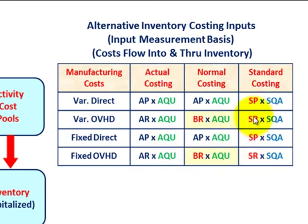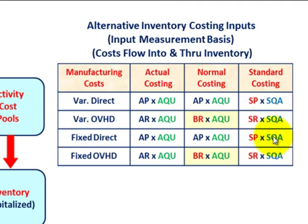Standard costing is different from both: it's based on a predetermined rate — not an actual rate or price — and uses a predetermined quantity allowed for the product, not the actual quantity used for the period. That covers activity-based costing as an inventory valuation method.